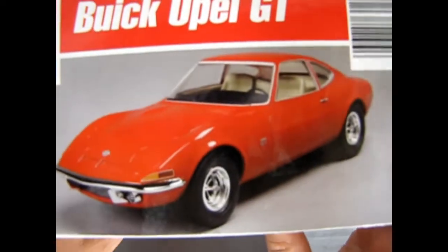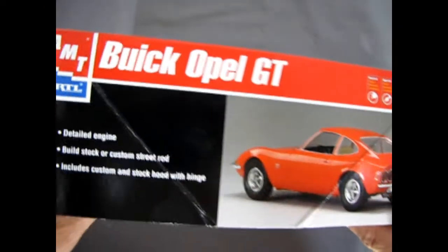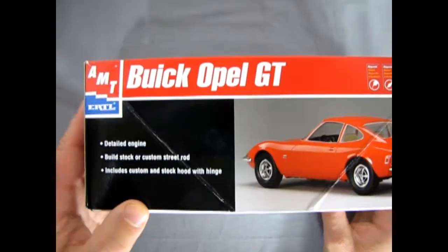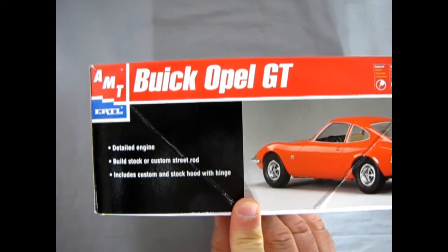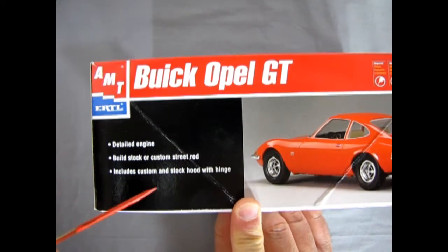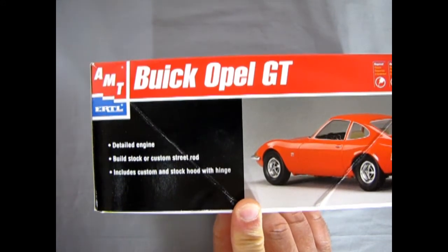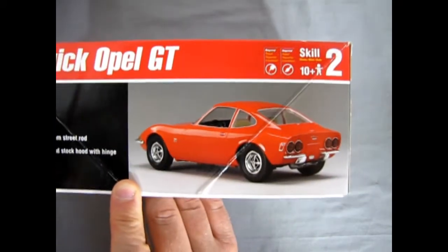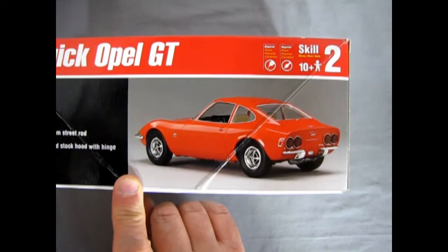Just turn this up again you can see the edge of the box. And then on this side we have some special features called out. Basically a detailed engine. You can build this stock or custom street rod. Includes custom and stock hood with hinge. And then there we have the awesome image of the back of the Opel GT.